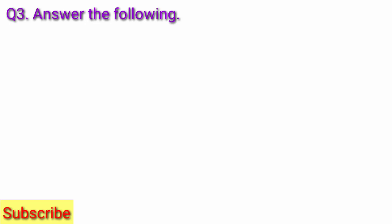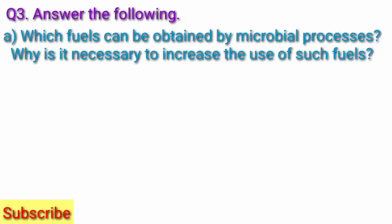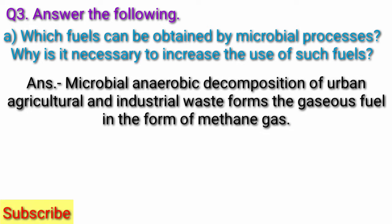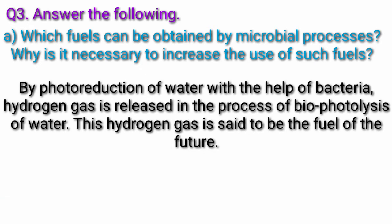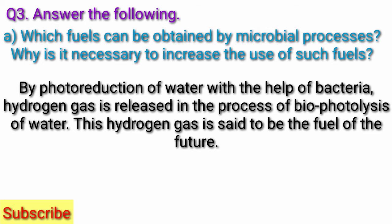Question 3. Answer the following. A. Which fuels can be obtained by microbial processes? Microbial anaerobic decomposition of urban, agricultural and industrial waste forms gaseous fuel in the form of methane gas. Alcohol is another clean form of energy used as ethanol, obtained by fermentation of molasses by treating it with Saccharomyces yeast. By photoreduction of water with the help of bacteria, hydrogen gas is released in the process of bio-photolysis of water. This hydrogen gas is said to be the fuel of the future.